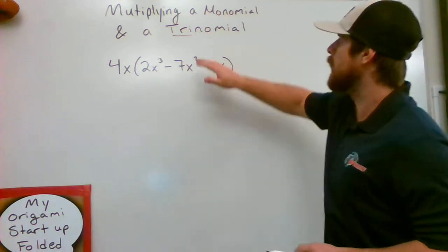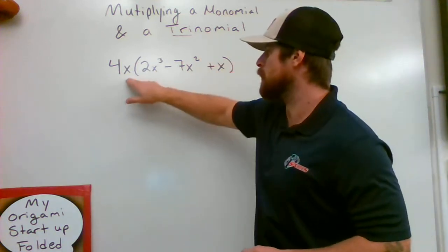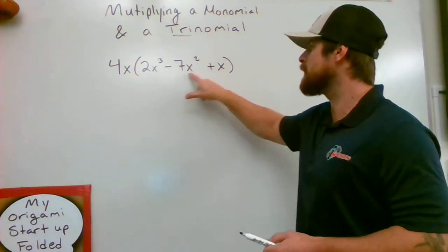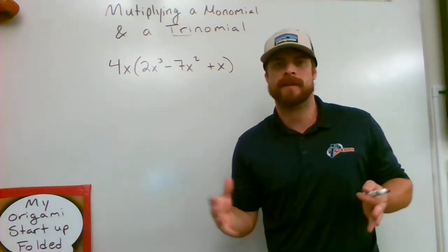Tri. Okay, so right here we have our monomial, that's one single term, 4x, being multiplied by these three terms inside of the parentheses.